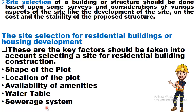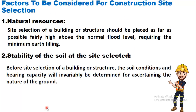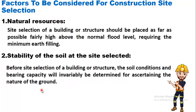The first factor to be considered for construction site selection is natural resources. The site should be placed as far as possible fairly high above the normal flood level, requiring minimum earth filling. The second factor is stability of the soil. Before site selection, the soil conditions and bearing capacity will invariably be determined for assessing the nature of the ground.